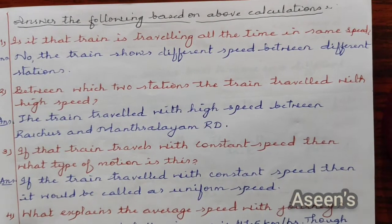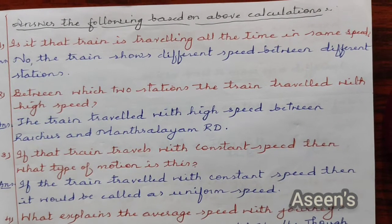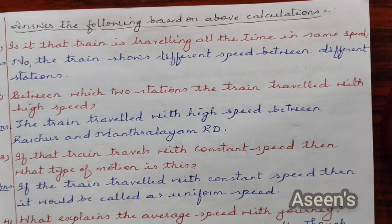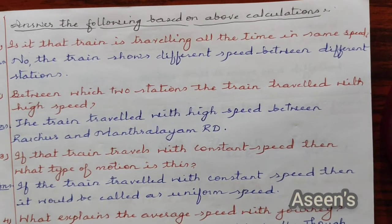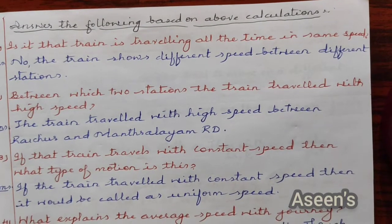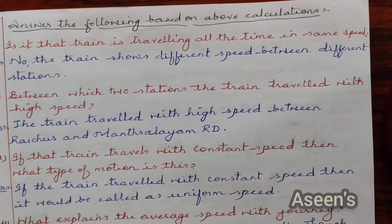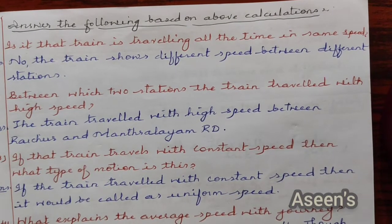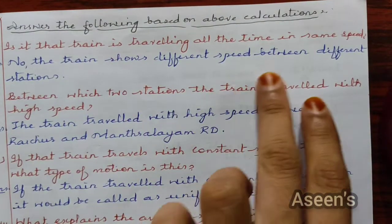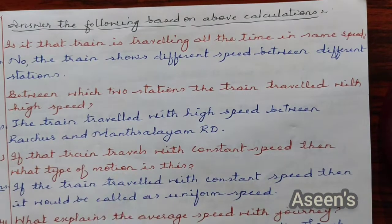Next, answer the following based on the above calculations. We have a set of 4 questions. First: is the train travelling all the time at the same speed? No, the train shows different speed between different stations.